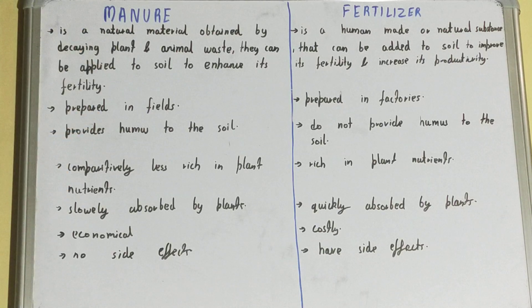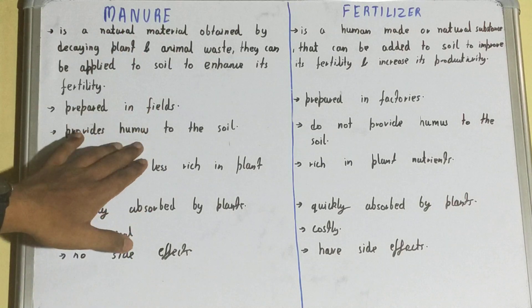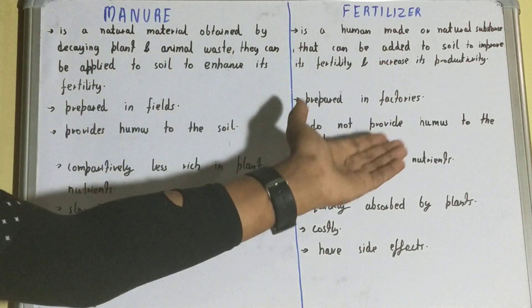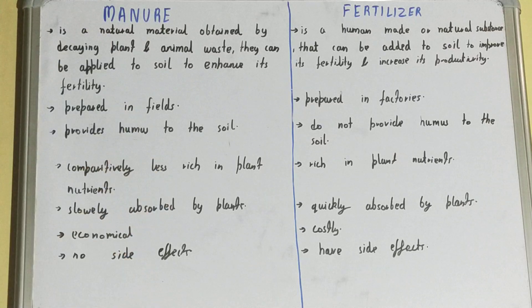Manure is prepared in fields, but fertilizer is prepared in factories. Also, manure provides humus to the soil, whereas fertilizer does not provide any humus to the soil.